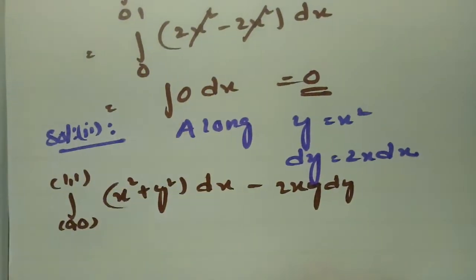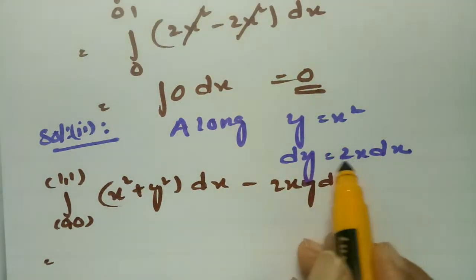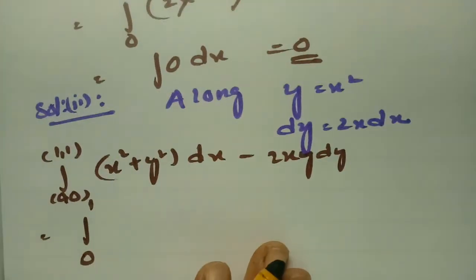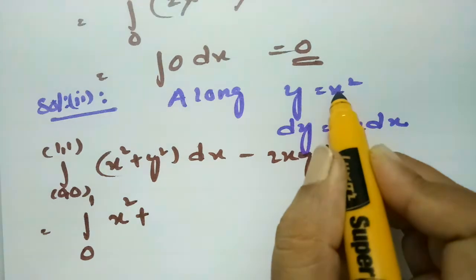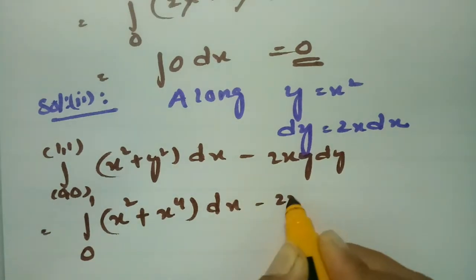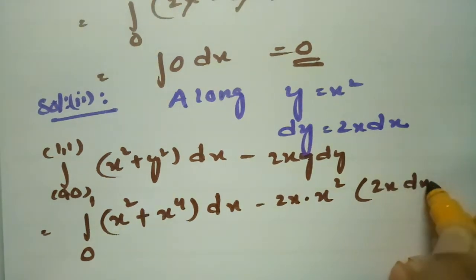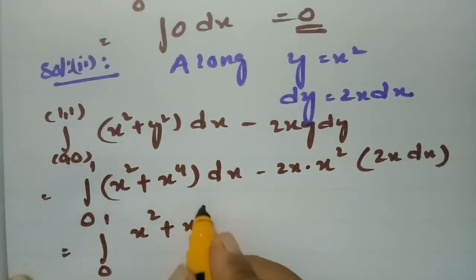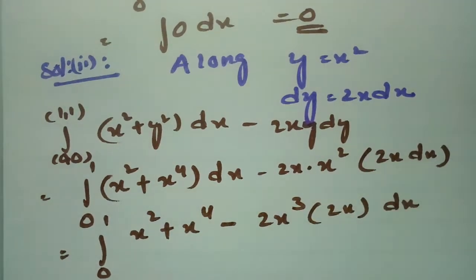Now we have to substitute all these values. In place of y I substitute x², and in place of dy I use 2x dx. The limits of x are from 0 to 1. So y² will be x⁴. This gives integral 0 to 1 of (x² + x⁴)dx minus 2x·x²·2x dx, which is (x² + x⁴) minus 2x³ times 2x dx.